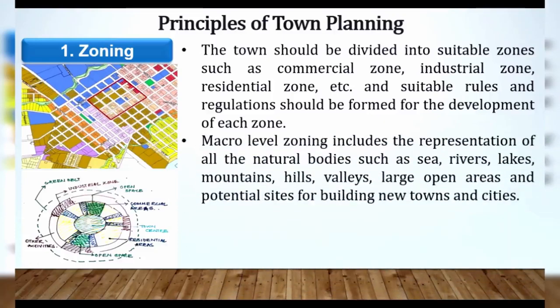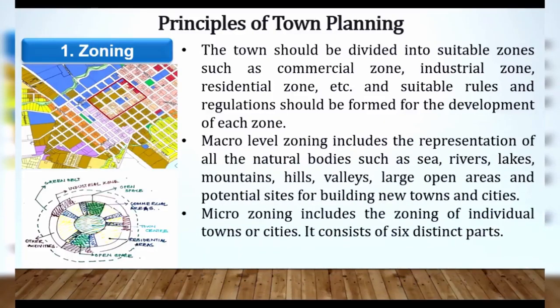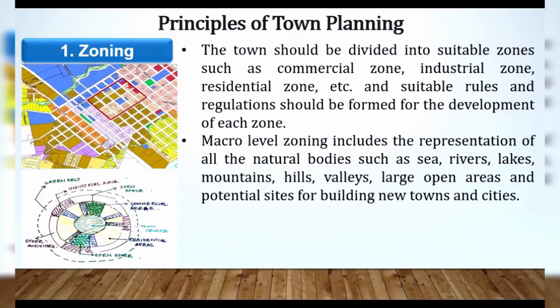Zoning ke basic types bhi ho sakte hain. First is macro level zoning, aur doosra hota hai micro level. Macro level zoning mein kya kya include honga? Representation of all natural bodies. Yeh question aa sakta hai exam mein — ke macro level zoning mein kya kya include honga? Aur uske 4 options aa sakte hain: natural bodies ho sakte hain — hills, rivers, valleys, open areas. Potential sites for the buildings of new towns and cities — yeh bhi include hota hai.